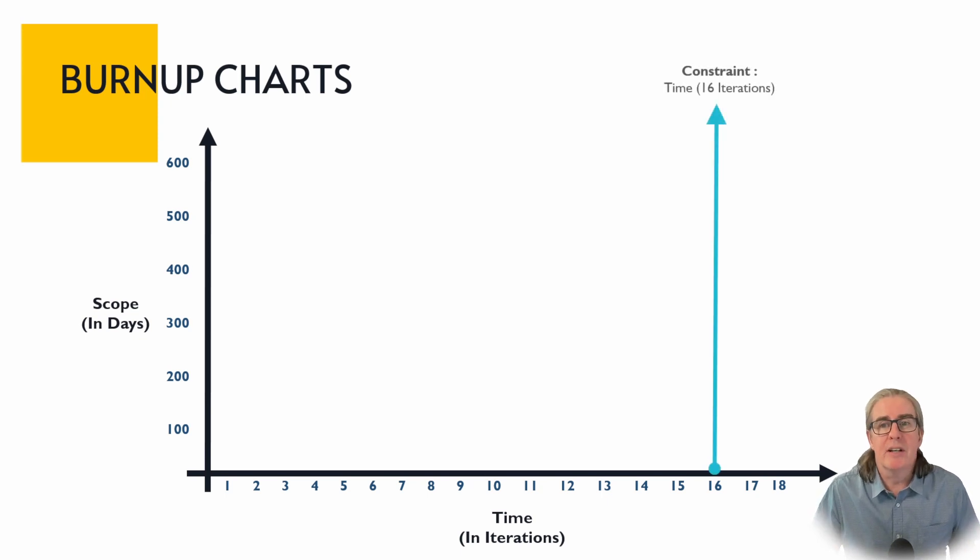In this project we've got a constraint of 16 iterations. Maybe this is two-week blocks so this is going to be 32 weeks. This is an eight-month project. You know that timescale for what needs to be done is around that sort of eight months. You've got a constraint of around about 600 days. You know typically that's the amount of work that you expected to come through the pipeline here. So with these two constraints in place then what you do is you start to work through the backlog that's there.